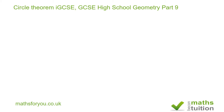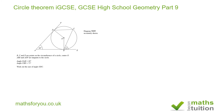It says B, C and D are points on the circumference of a circle with center O. Lines ABE and ADF are tangents to the circle. The angle DAB is 40 degrees and angle CBE is 75 degrees. We need to work out the size of angle ODC, as shown here.